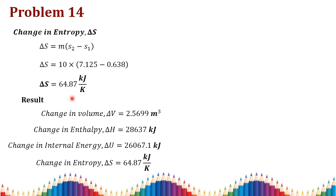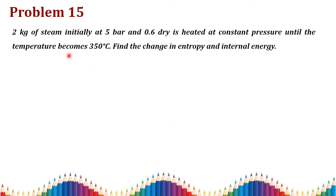Change in entropy: ΔS equals mass times (s2 minus s1), giving 64.87 kJ/K. Note that after multiplying by mass there is no 'per kilogram' unit. As a result, we have found ΔV, ΔH, ΔU, and ΔS for the given constant pressure process.